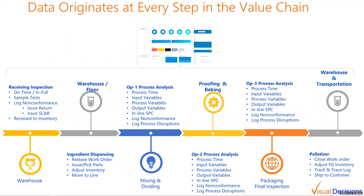Data actually originates at every step in the value chain. We looked at an example with a bakery company, examining everything from receiving and inspection all the way out to the warehouse and transportation to stores. At every step along the process they were collecting information — PLCs collected detailed information about every single step, work orders were tracked in ERP and MES systems. Rather than going out and just observing the process, we were able to take this existing information and map it into the various analyses.